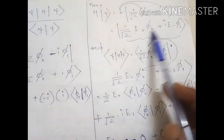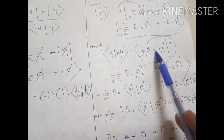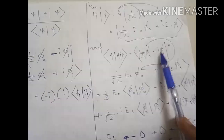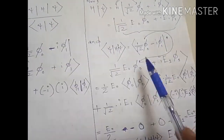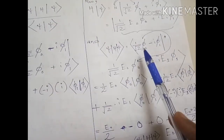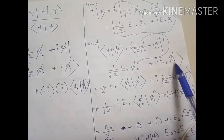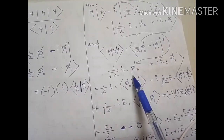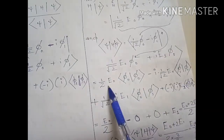Now we have the full term H|ψ⟩ = (1/√2)(E₀φ₀ + iE₁φ₁). We now compute ⟨ψ|H|ψ⟩ by multiplying ψ* = (1/√2)(φ₀ - iφ₁) with this result. We multiply term by term: ⟨φ₀|φ₀⟩ gives 1, ⟨φ₁|φ₁⟩ gives 1, and cross terms ⟨φ₀|φ₁⟩ and ⟨φ₁|φ₀⟩ give zero.